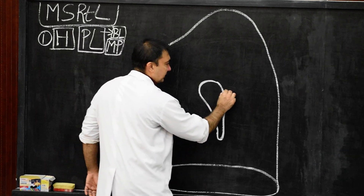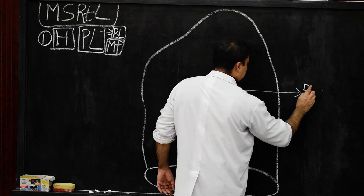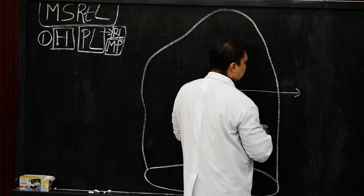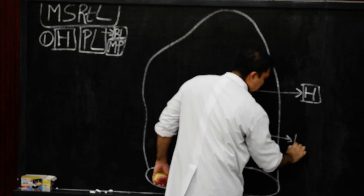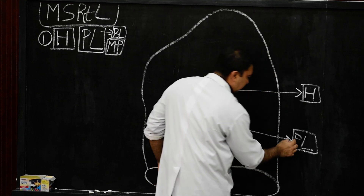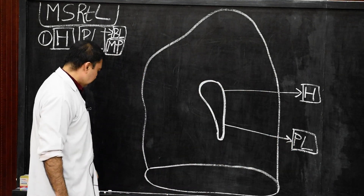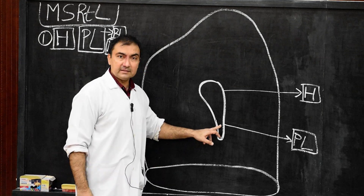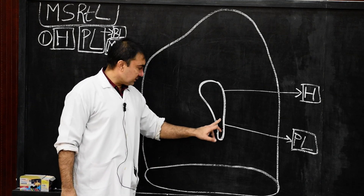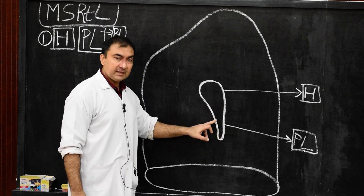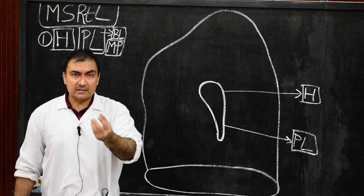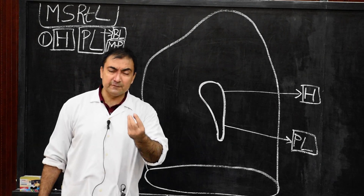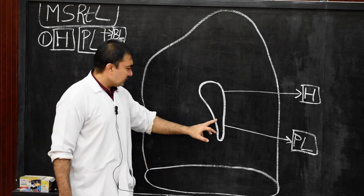The hilum is continuous below with the pulmonary ligament. The pulmonary ligament is a bilaminar fold of mediastinal pleura between the lateral margins of the esophagus and the medial surface of the lung. In the pulmonary ligament, you find some loose areolar connective tissue and also some lymph vessels.